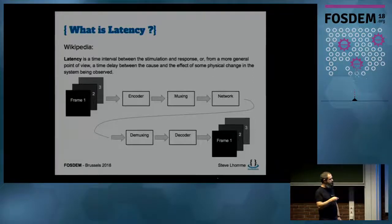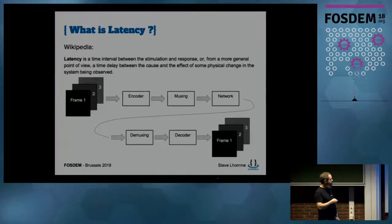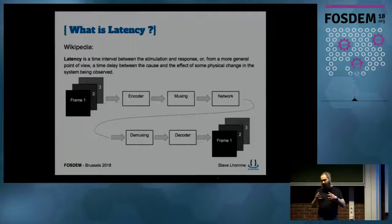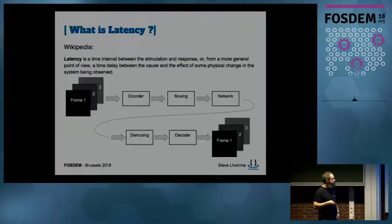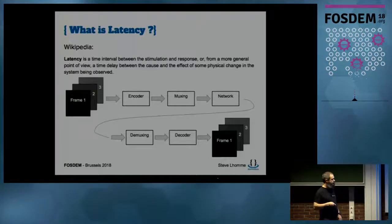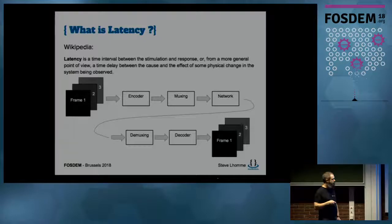Here's a diagram of what happens when you do live streaming of video and audio. For video, frames go into an encoder, then muxing — putting it in a format that can be mixed with audio and adding timestamps. Then it goes through the network. On the other side there's demuxing to get the encoded frames, which go through the decoder, and then you get the frames. Each of these steps introduces latency.